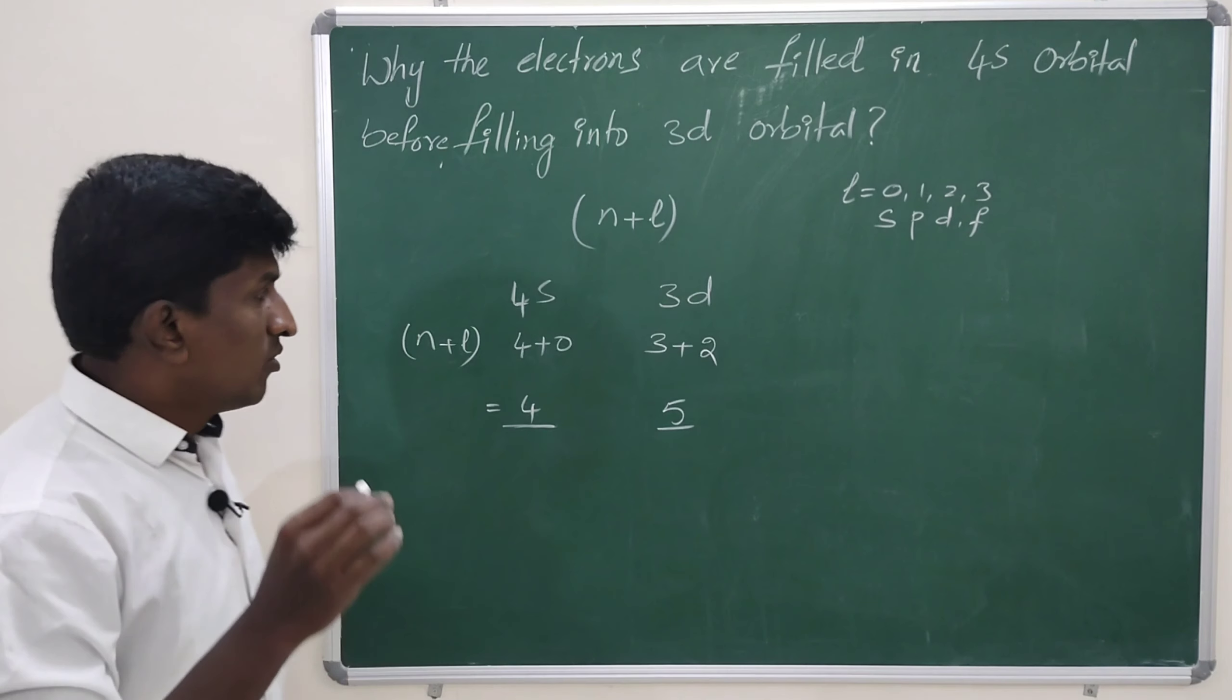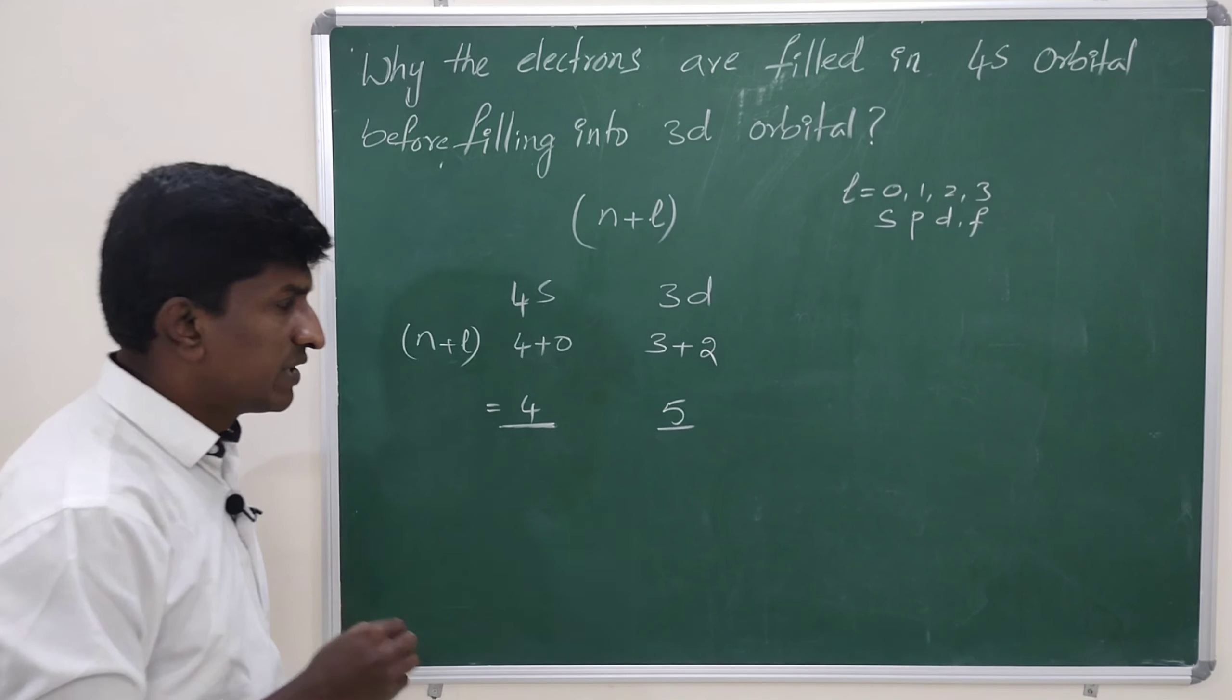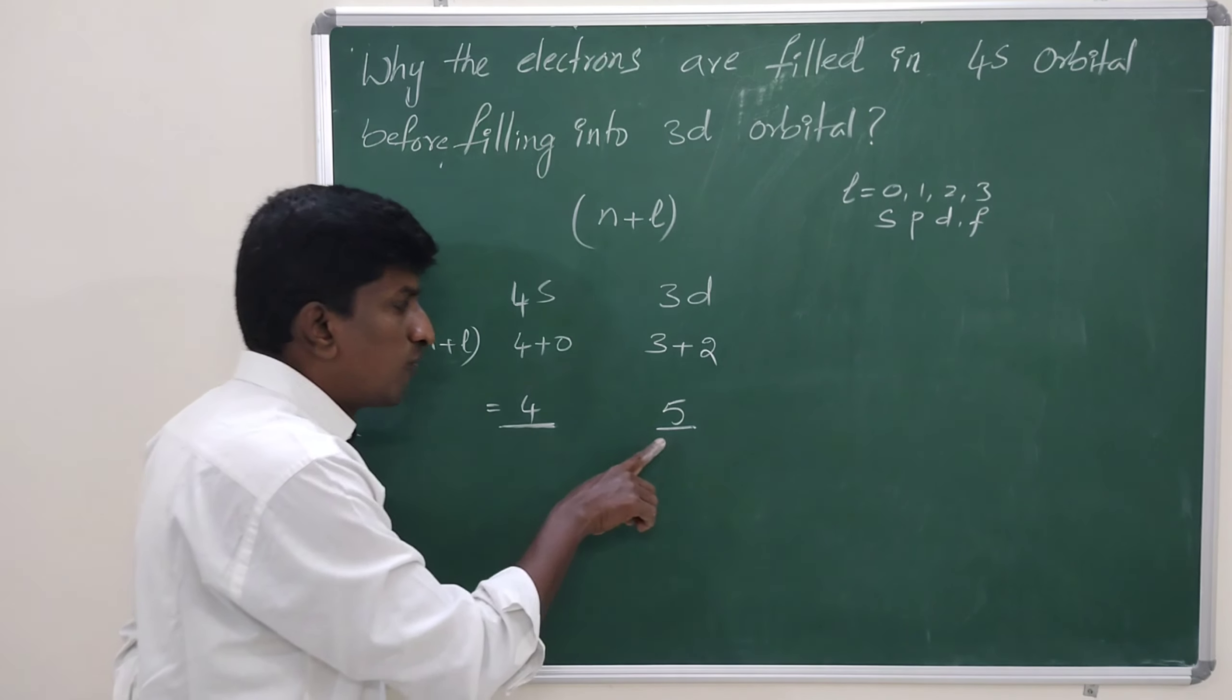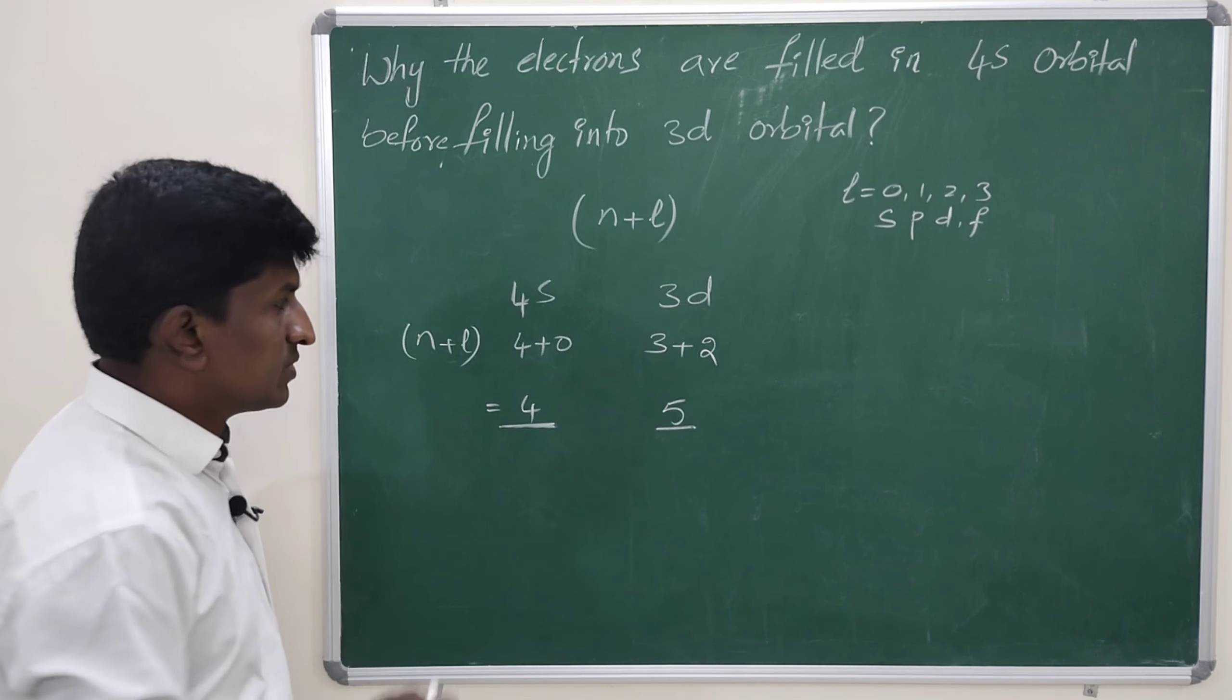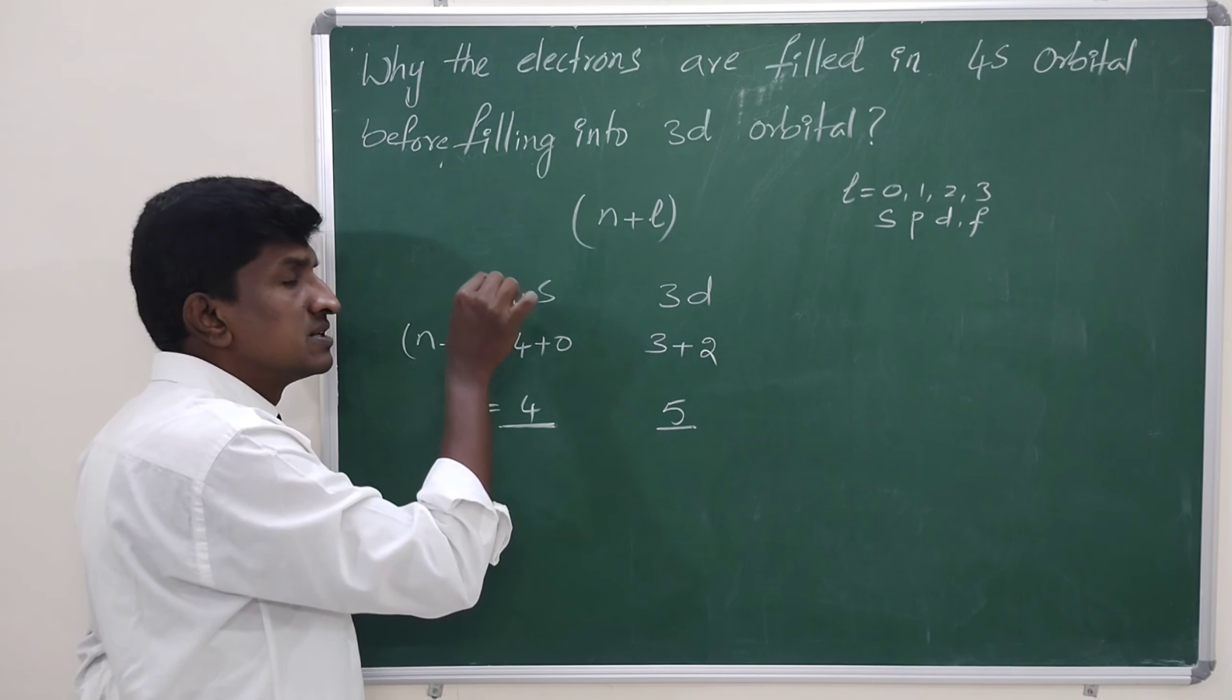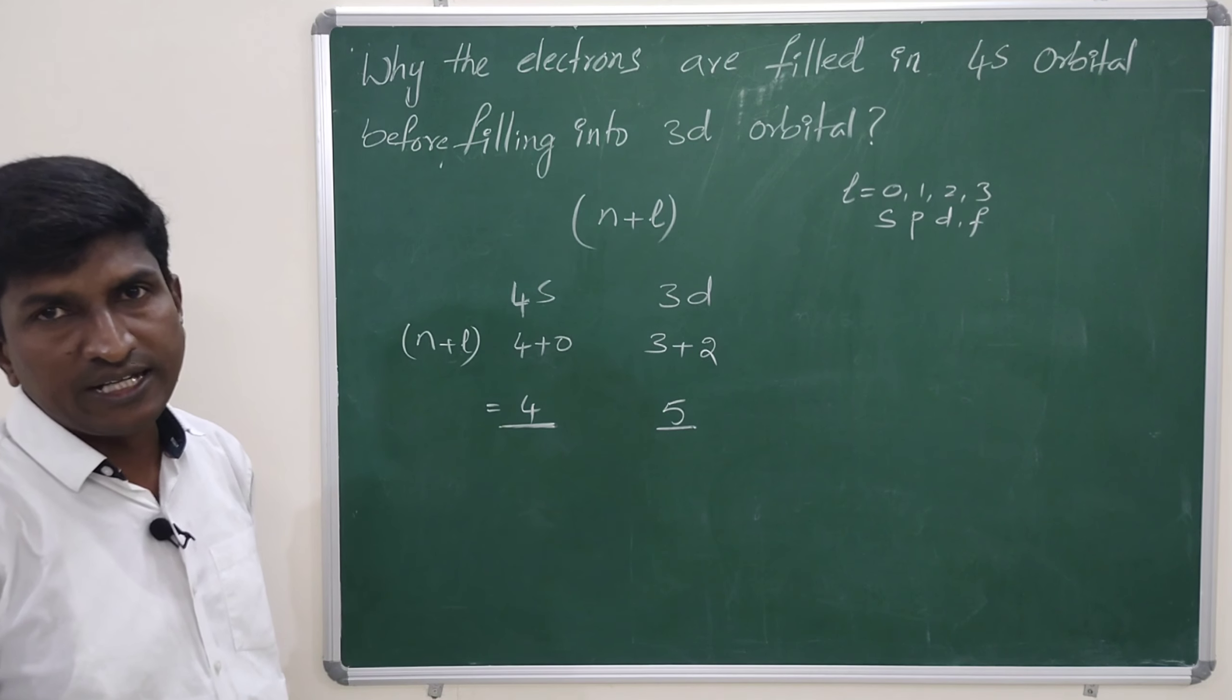Then, the 4s orbital is having the energy of 4 units. Whereas, the 3d orbital even though it is internal shell, it has 5 units of energy. That's why 4s orbital having less energy. That's why the electrons first filled into 4s. Then, the electrons enters into 3d.